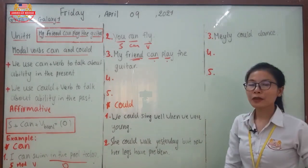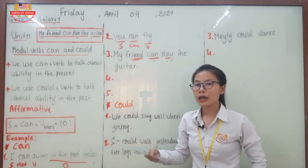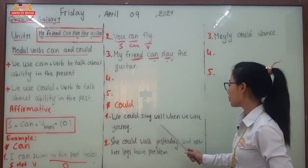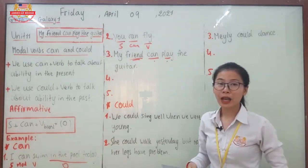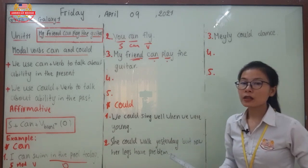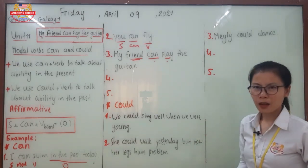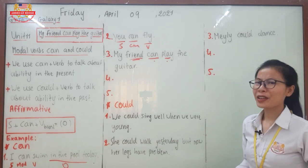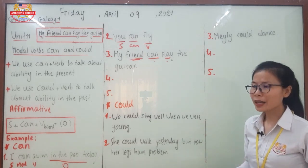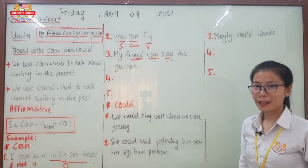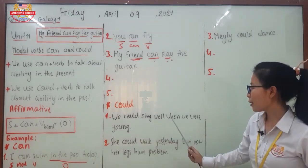Now let's look at 'could.' We use 'could' to refer to activities or abilities in the past. For example: 'We could sing well when we were young.' This means that when you were young you could sing well, but now as teenagers your voice has changed and you cannot sing as well as when you were children.